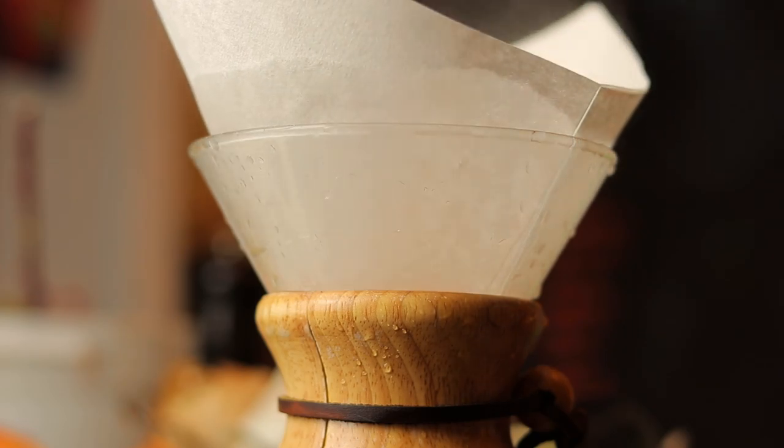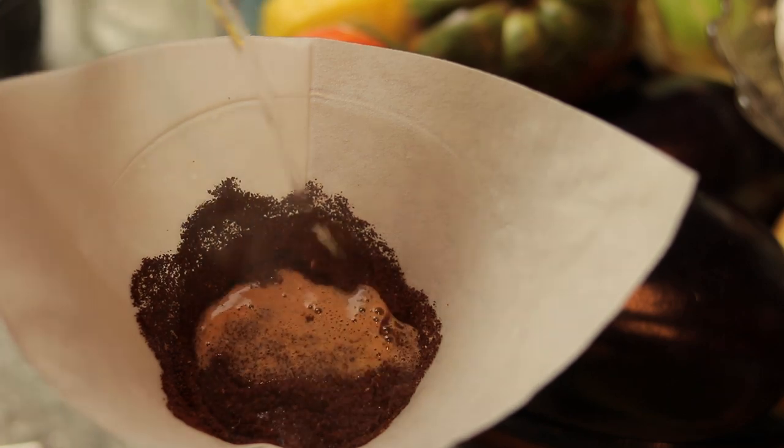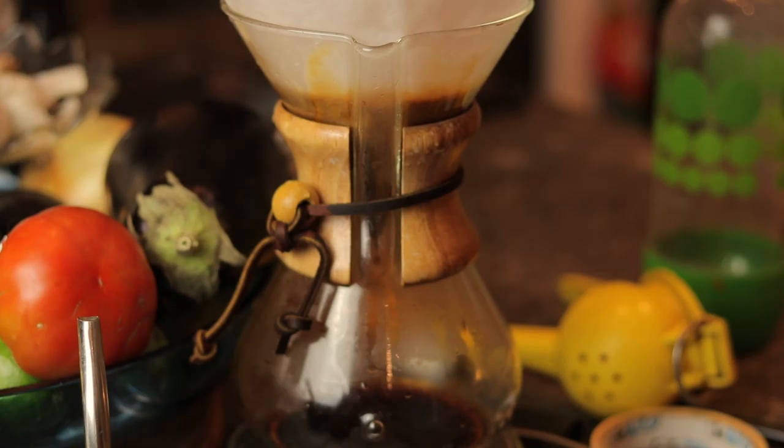You might have observed this while brewing filter coffee. By the end, many small particles have found their way to the paper and water flows much slower. At the same time, the fastest flowing paths through the coffee puck remove material and make it even easier for water to flow.